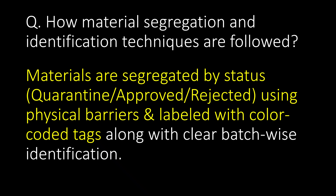How are material segregation and identification techniques followed? Materials are segregated by status — like quarantine, approved, or rejected — using physical barriers and labeled with color-coded tags, along with clear patch-wise identification.